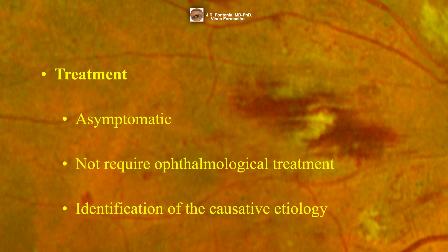Roth spots are most often asymptomatic and do not require ophthalmological treatment. Visual disturbance due to Roth spots is rare, but can occur with macular involvement. The most important management consideration in patients with Roth spots is identification of the causative etiology to prevent possible ocular and systemic complications due to the underlying disease.